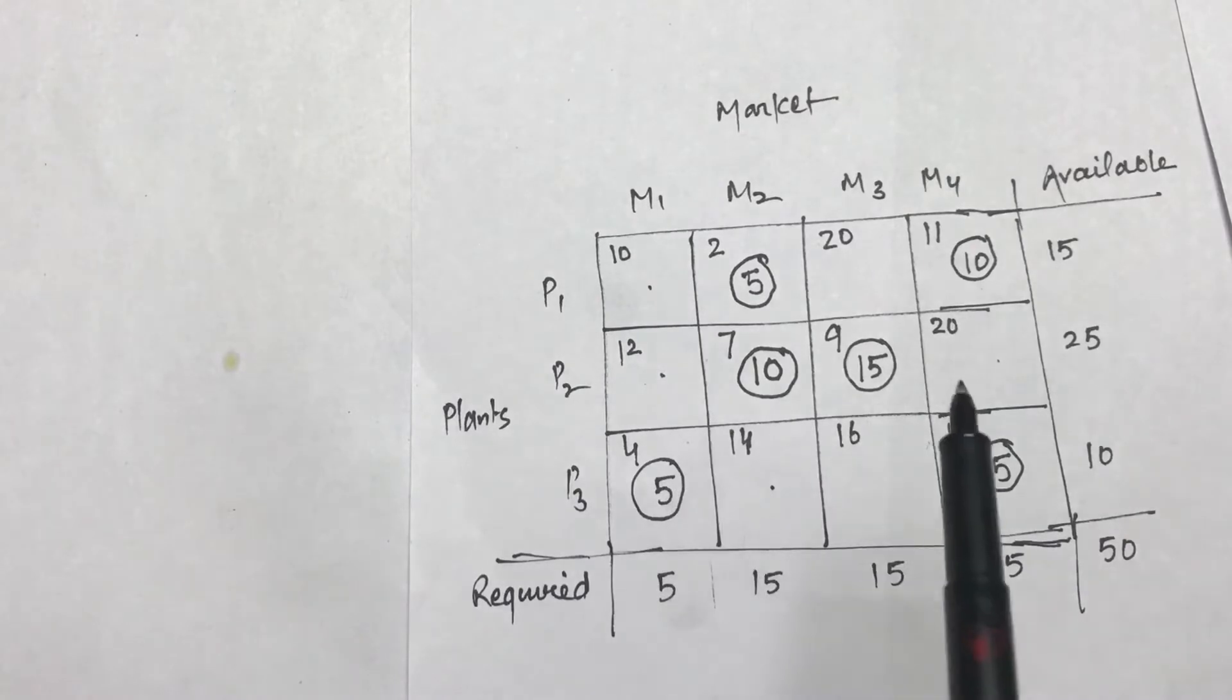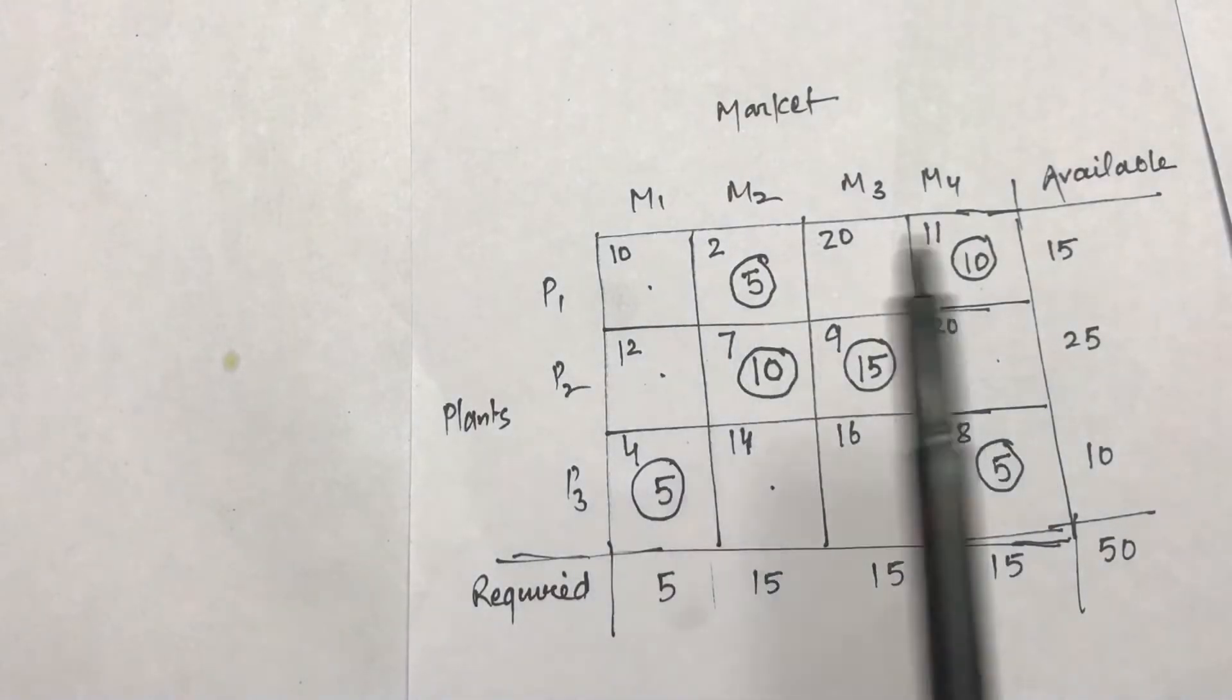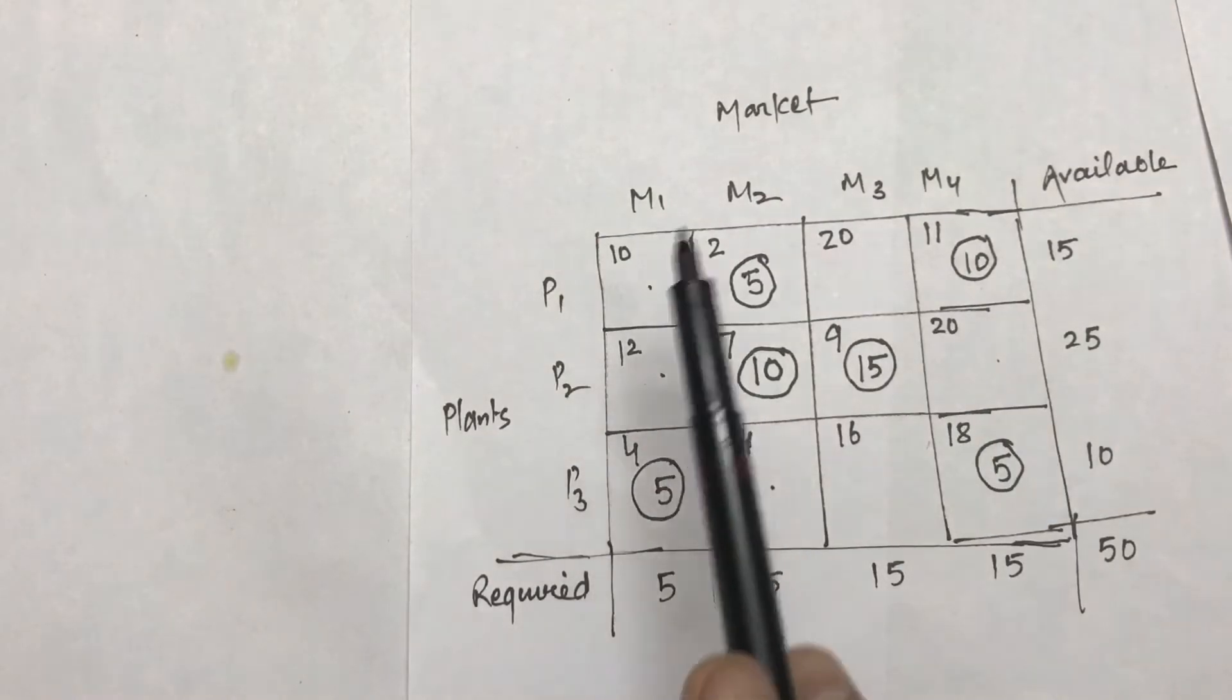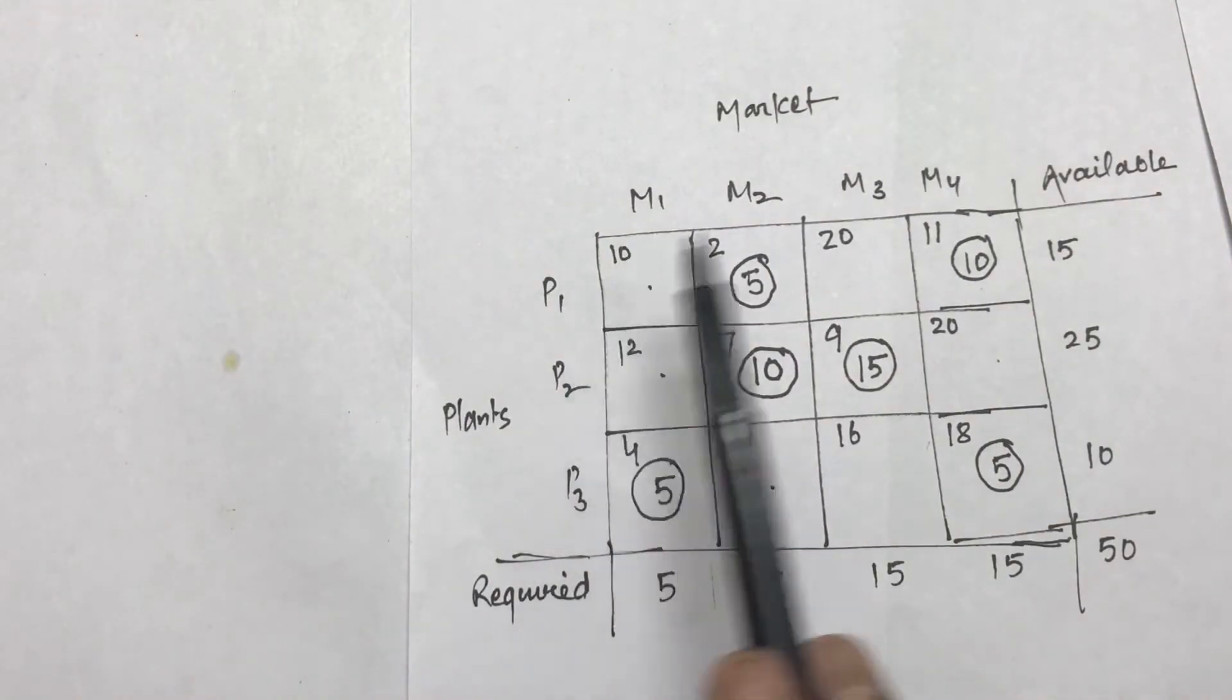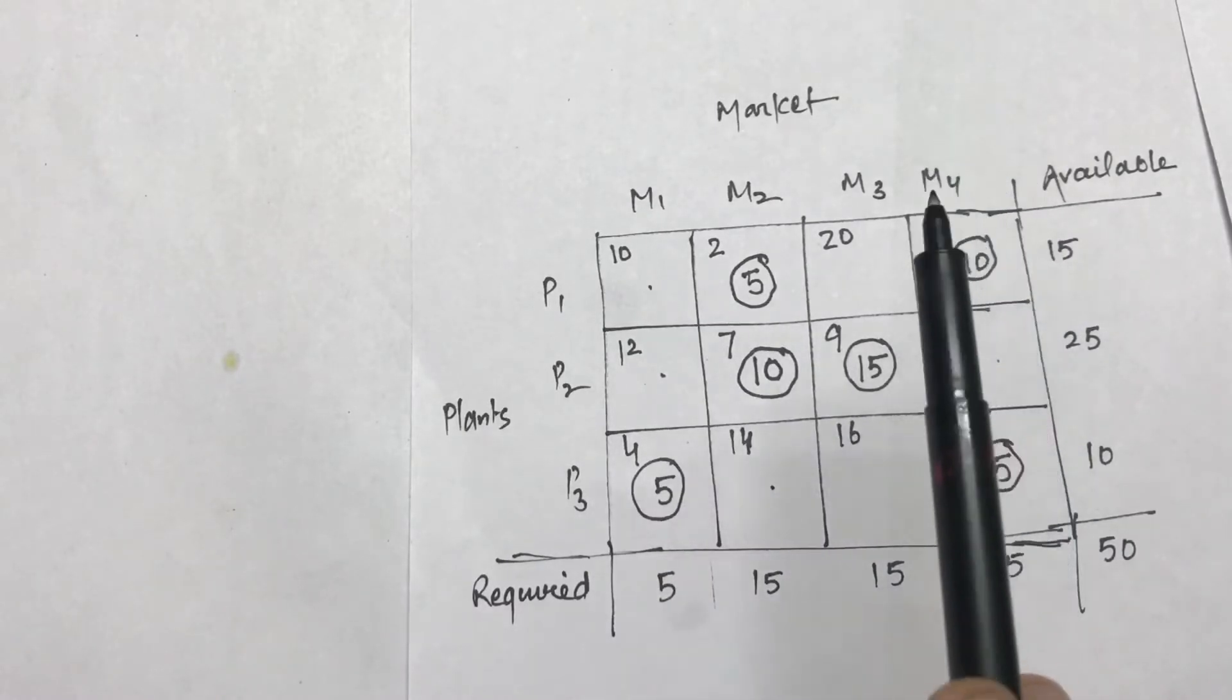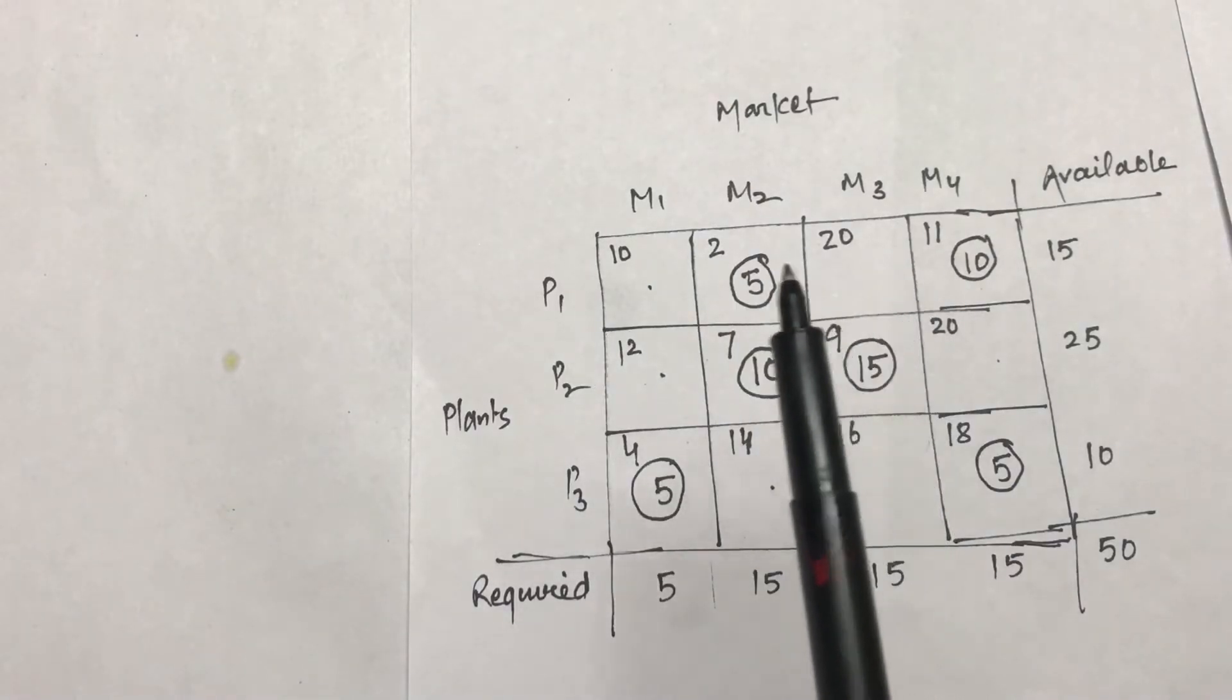Now you can also notice that degeneracy is now removed. How many allocations I have? 1, 2, 3, 4, 5, 6, which were initially 5 in the previous table. So there are 6 allocations which are equal to 3 rows plus 4 columns, so 3 plus 4 is 7 minus 1, that is equal to 6. So my number of allocations are equal to rows plus column minus 1, so degeneracy is also removed.